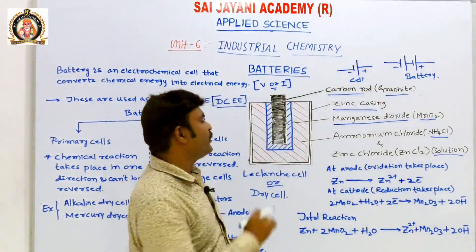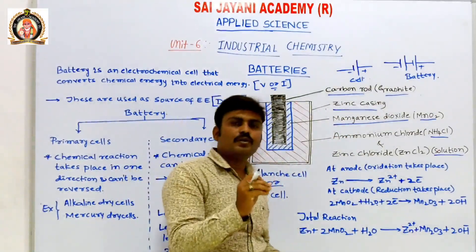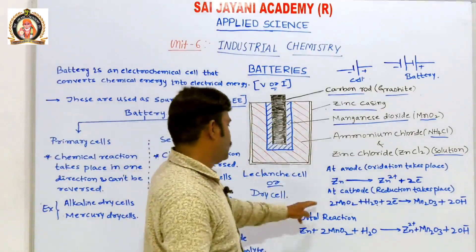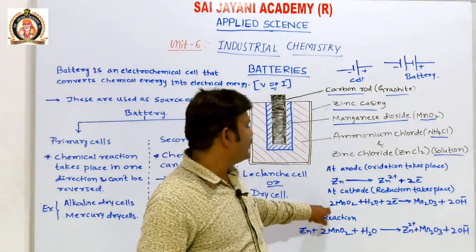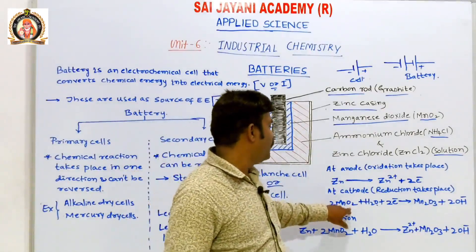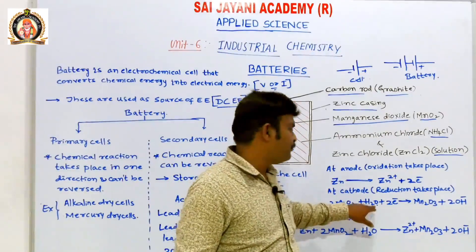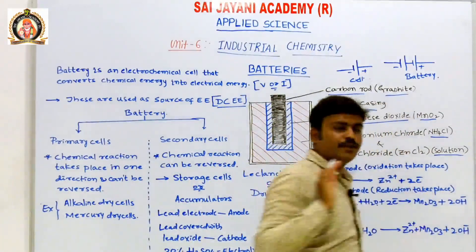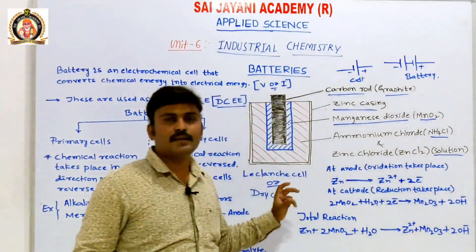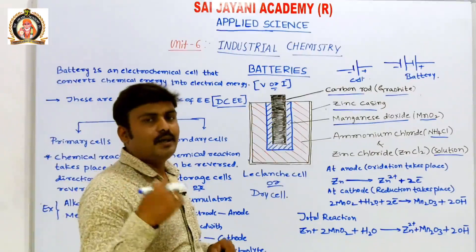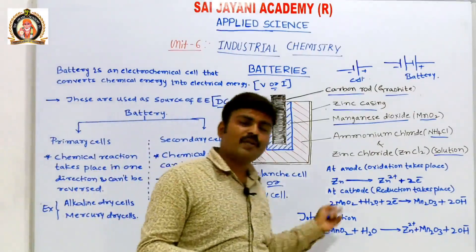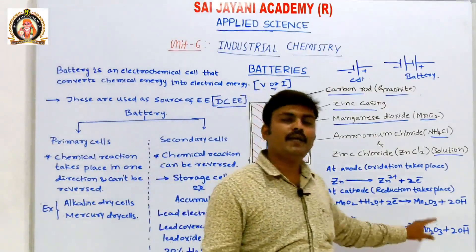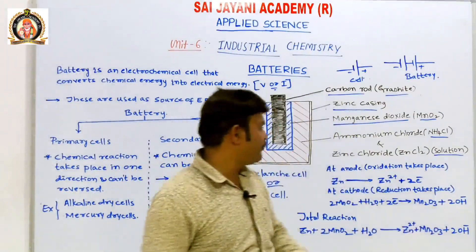Reduction means taking up electrons. At the cathode: 2MnO₂ + H₂O + 2e⁻ → Mn₂O₃ + 2OH⁻. The overall reaction is: Zn + 2MnO₂ + H₂O → Zn²⁺ + Mn₂O₃ + 2OH⁻.